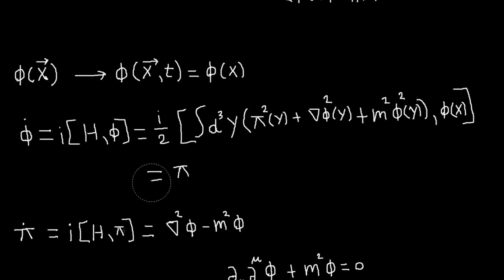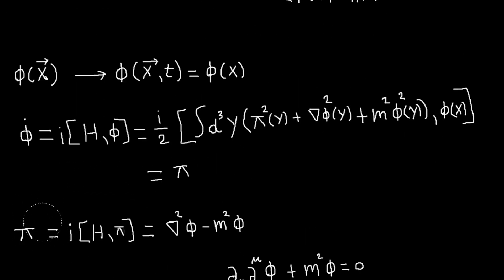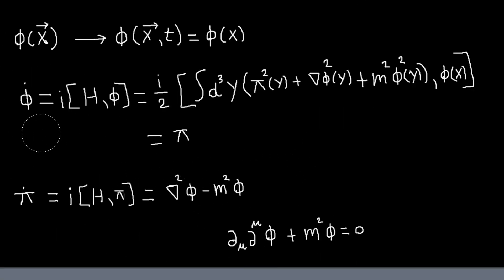And so similarly, you can compute the time evolution of pi. And that's a little bit more complicated. But again, we have everything we need to compute it. And I think in David Tong's lecture notes, he does go into enough detail to work it out if you want to. But the point of all this is that if we combine these two equations of motion, we get the Klein-Gordon equation.